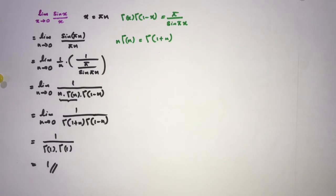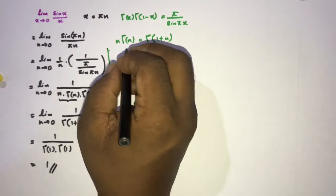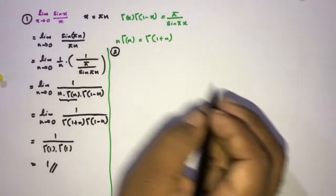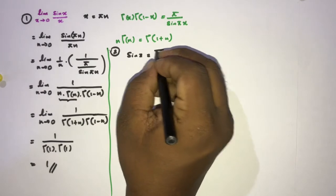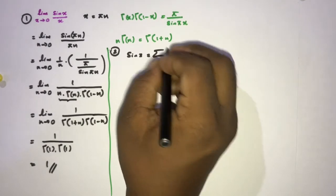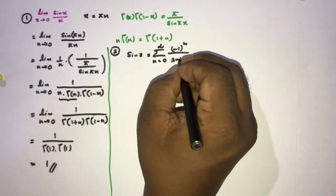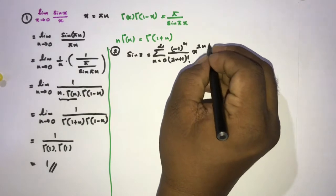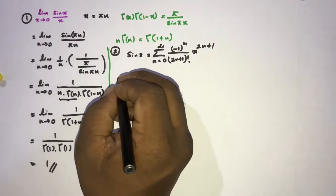Next, the second method: we use the power series. We know that sin(x) equals the sum from n=0 to infinity of (−1)^n / (2n+1)! times x^(2n+1).